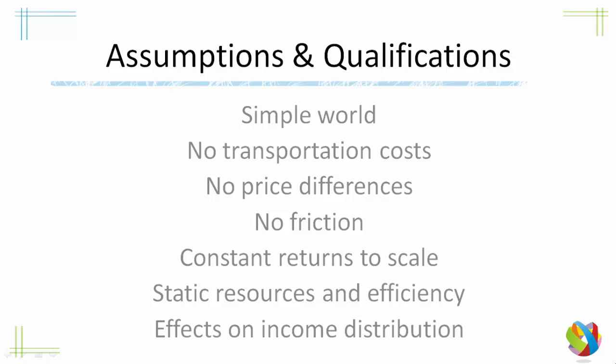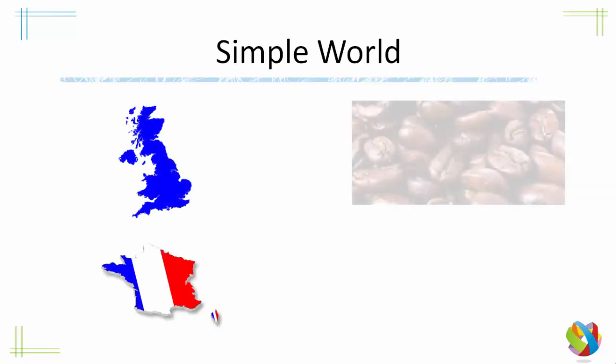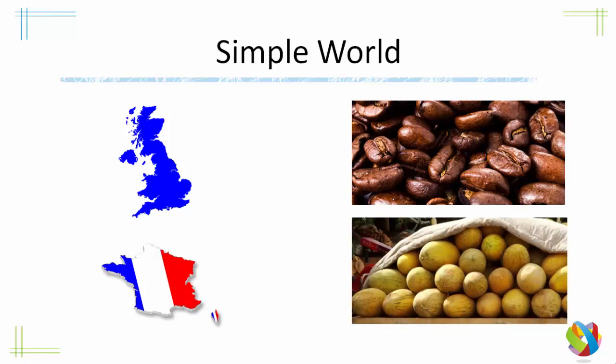Let's have a look at the simple world first. The idea of Comparative Advantage is normally based on just two countries and two products — here we have Britain and France, and coffee and melons. But in reality the world is significantly more complex, with at least 180 countries and literally millions of different products. The question is: does this model hold up to the reality of a far more complex world? We'll look at the evidence in the conclusion.